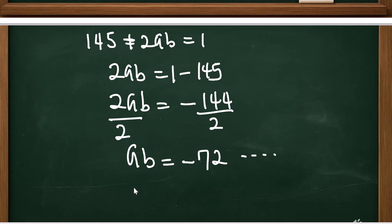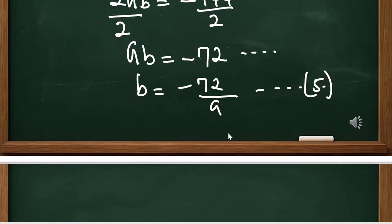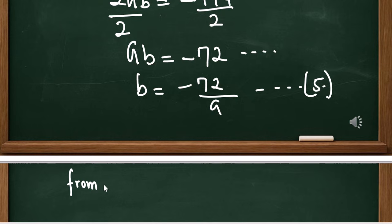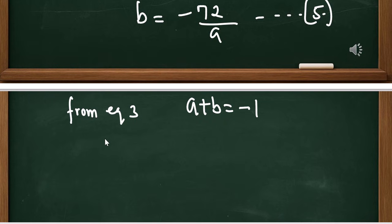Before calling this equation 5, I can express B equals negative 72 over A. Let's make this equation 5. Now going back to equation 3: A plus B equals negative 1, and recalling that B equals negative 72 over A, I'm going to plug that in.